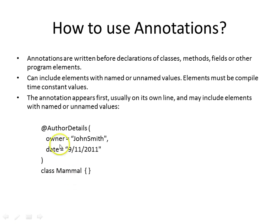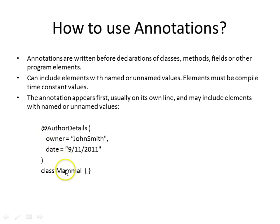For example, you have a class called Mammal and you have defined an annotation called AuthorDetails. This AuthorDetails has two values: owner and date. The owner is John Smith and the date is 9-11-2011. This is how you declare an annotation. An annotation appears before the element it applies to — in this case it applies to the class called Mammal. All the values here are strings, so they are all constant values.